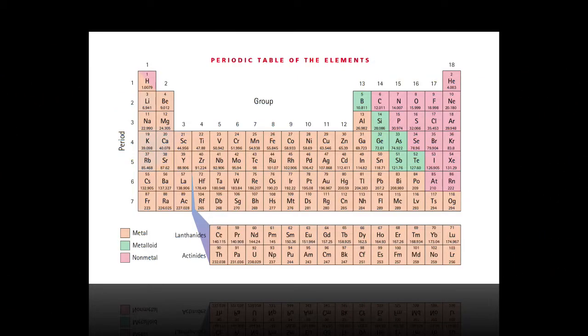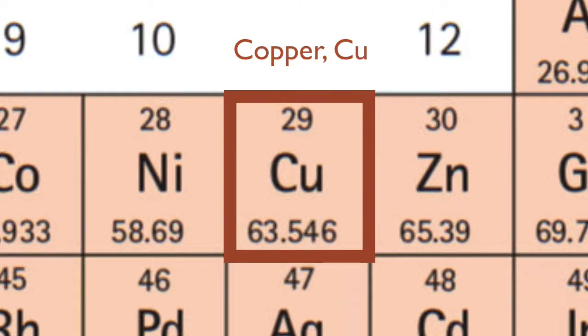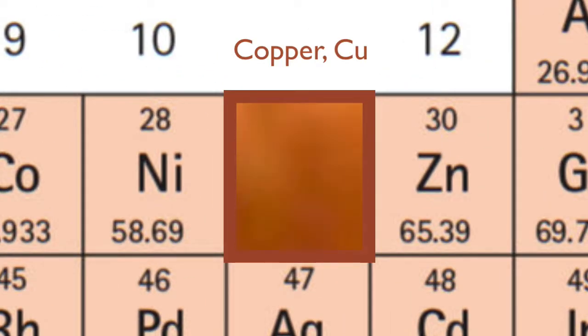An element is a material made of only one kind of atom. The element copper, for example, is made of only copper atoms.